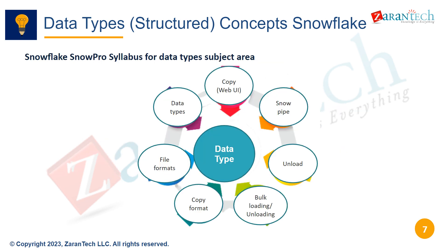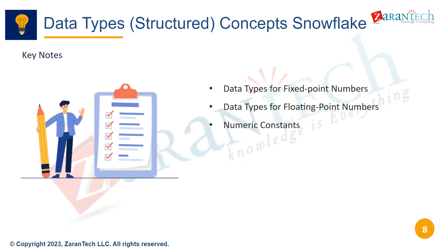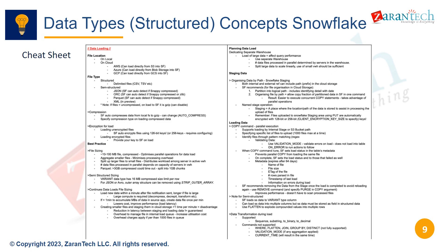The data type tells Snowflake the storage and format for data in columns, variables, parameters, etc. Using the optimal data type for the data results in proper storage size, processing, and handling of the values. Here are some key notes on Snowflake data types we'll cover, related to fixed and floating point numbers, numeric constants, and related details. This cheat sheet summarizes the structured data types in Snowflake including usage details and restrictions. Feel free to take a screenshot or reference the Snowflake documentation for more details.